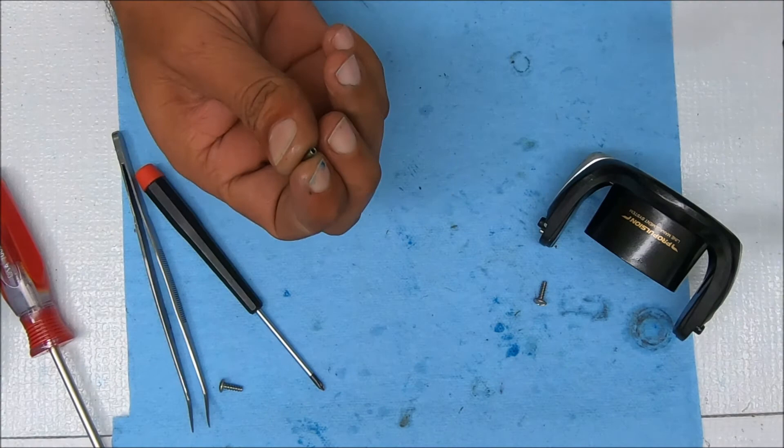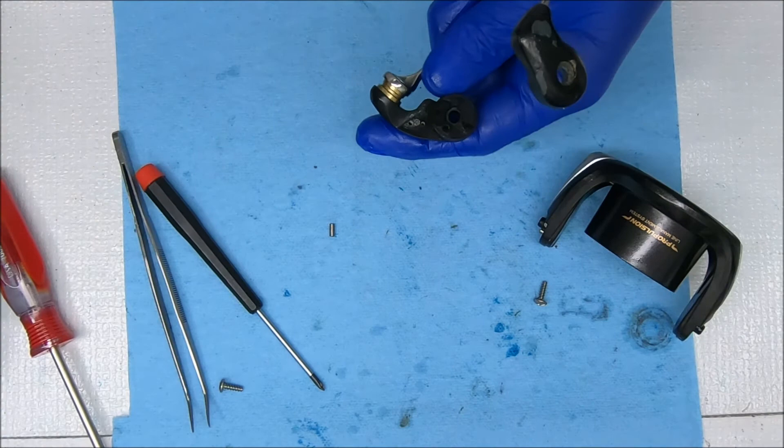All right, and the last piece we have here is a little cylindrical piece that goes inside here on the bail.